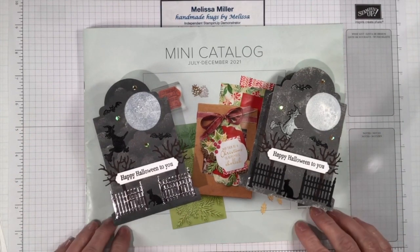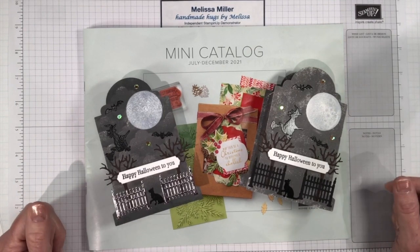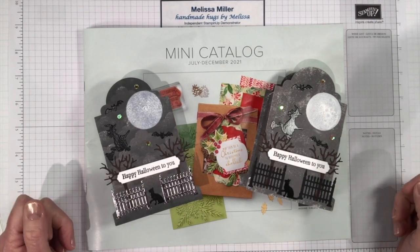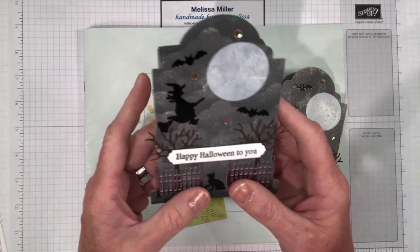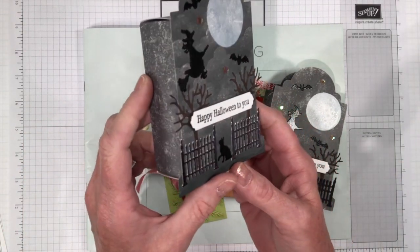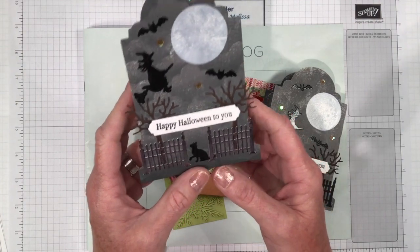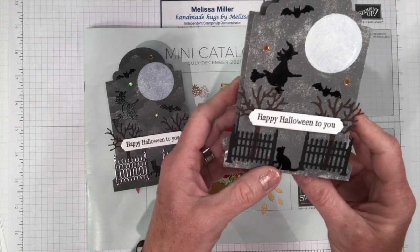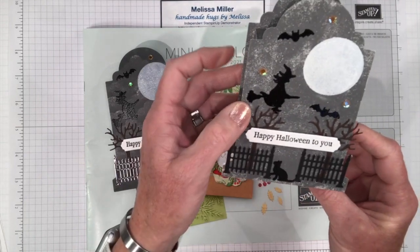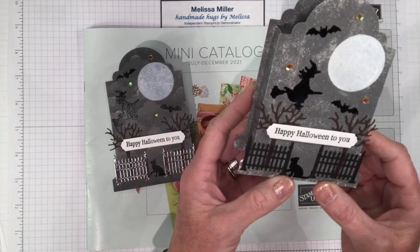Today I thought we would work with our tombstone treat boxes. They are on page 75 of our mini catalog. Halloween is going to be here really quickly. I just love to give out little boxes and bags that are decorated for the time of year and hand them out. I love to see someone smile and get a little treat.